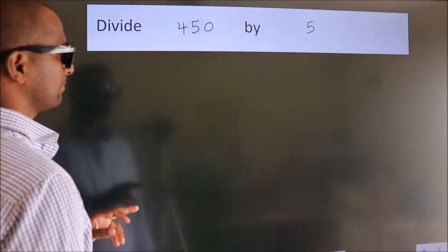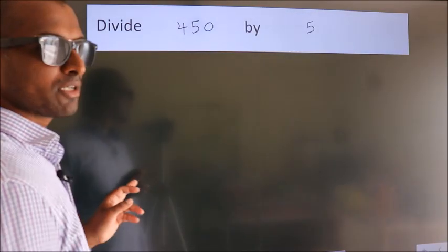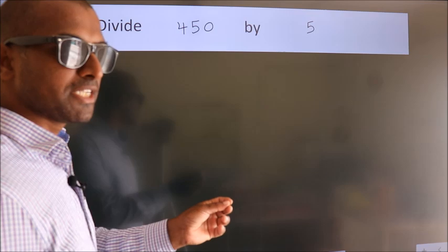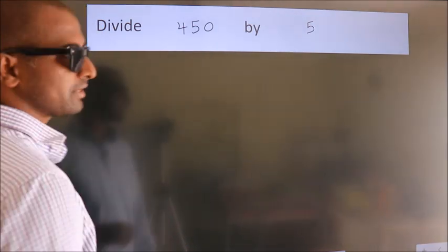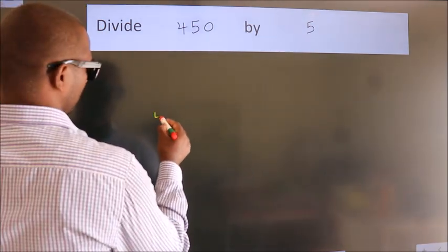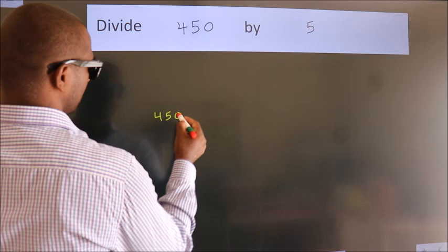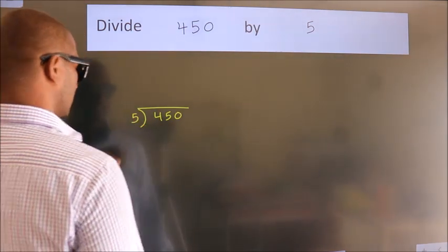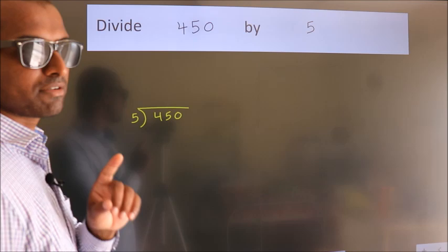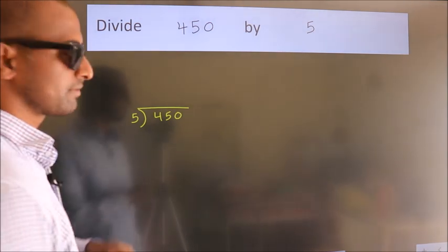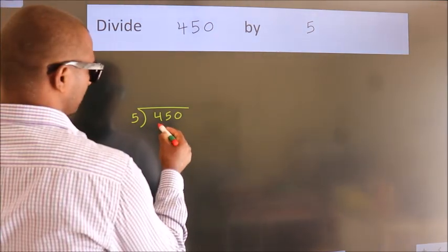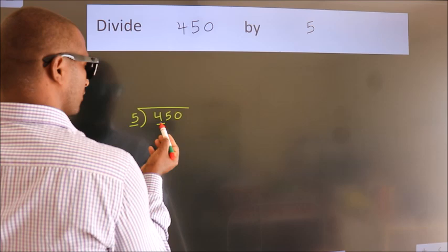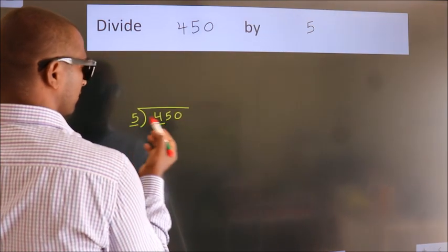Divide 450 by 5. To do this division, we should frame it in this way: 450 here, 5 here. This is your step 1. Next, here we have 4. 4 is smaller than 5, so we should take two numbers: 45.